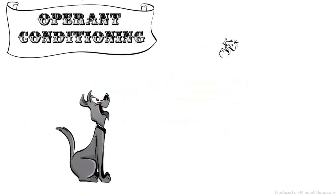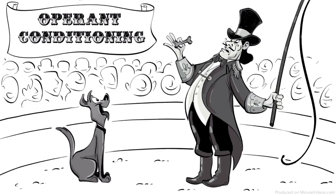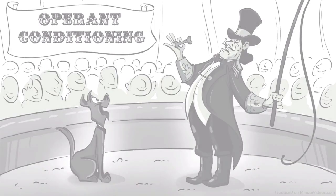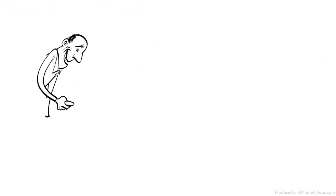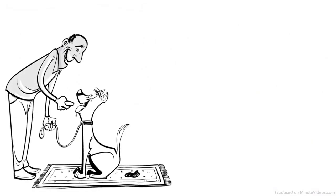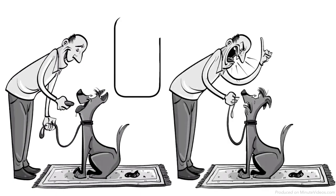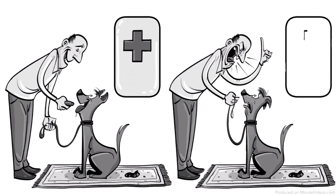Operant conditioning is based on the idea that we can increase or decrease a certain behavior by adding a consequence. For example, if a dog poops on a carpet, we can either provide reinforcement so the dog does it again or punishment so the dog stops. Both reinforcement and punishment can either be positive or negative, which means we have four possible ways to teach this dog a lesson.